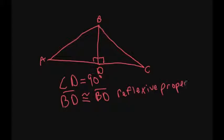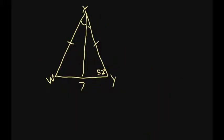congruent to BD because of the reflexive property. So if I wanted to prove these triangles congruent, all I would need to know is that AB is congruent to CB. If I knew that, then these are congruent based on the hypotenuse-leg theorem. If they're not congruent, then they're not congruent triangles.